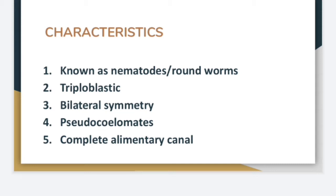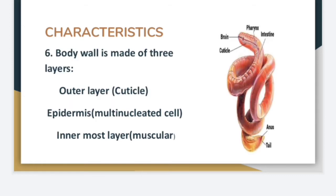The body of nematodes can be cut into two equal halves in one plane. They are pseudocoelomates, meaning the body cavity is known as the pseudocoelom. One important characteristic is that they have a complete alimentary canal, meaning one end is the mouth and the other end is the anus.